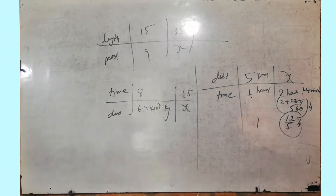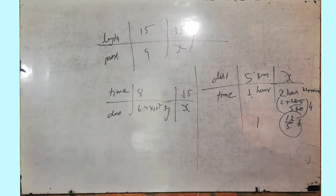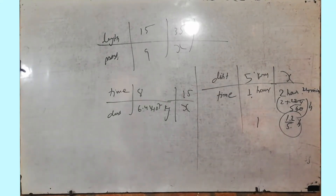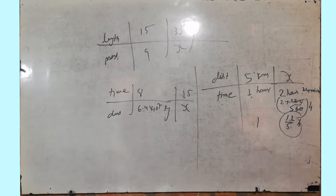Question number 13: 12 cardboards have a thickness of 65 mm. What will be the thickness of 312 such cardboards? Put number of piles in one column — 12 and thickness 65 — and for 312 piles find the thickness. Very easy.